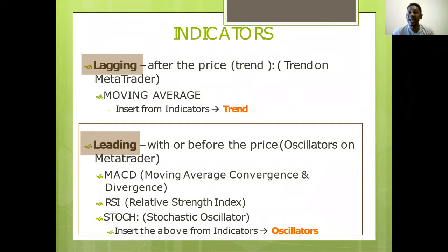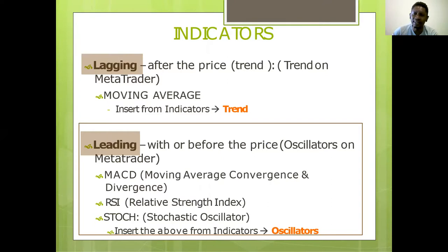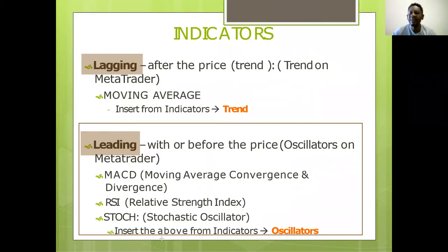Lagging indicators are laid back — I call them adults. Leading indicators are more forward by nature, giving their opinion of where the price will go — I call that the youthful generation. The majority of novice traders look like oscillators to me because they just cannot wait to enter the market. The indicators that are most sensitive are the most attractive indicators.